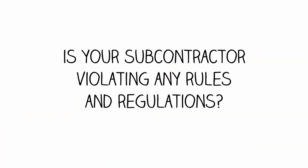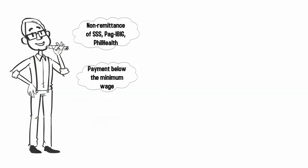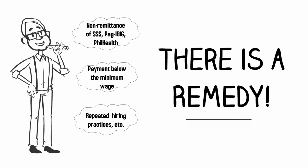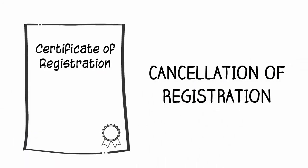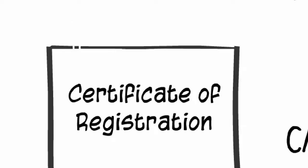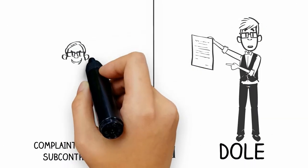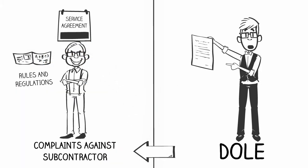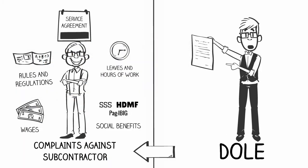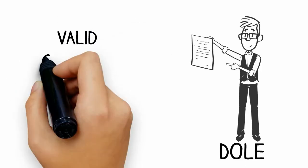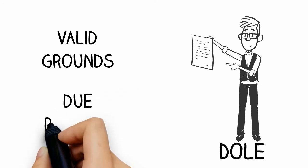If your subcontractor is violating any rules and regulations, it is important to know that there is an available remedy to correct the situation in a process called cancellation of registration. Upon a verified complaint, the DOLE Regional Director can commence the cancellation of registration of contractors or subcontractors based on valid grounds and after due process.